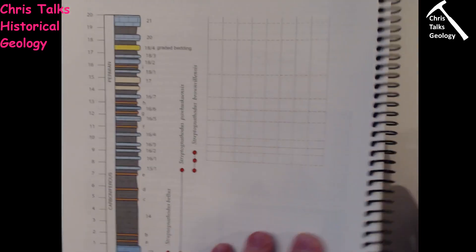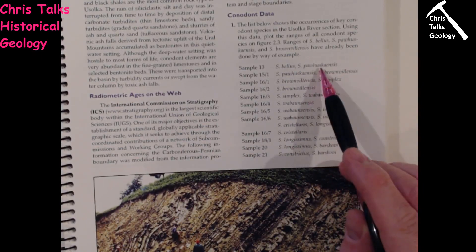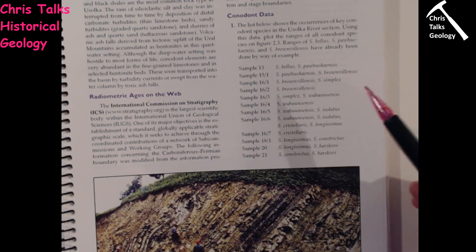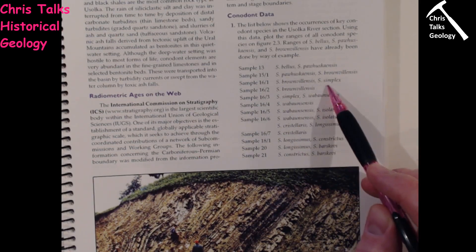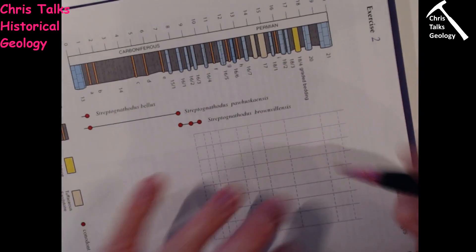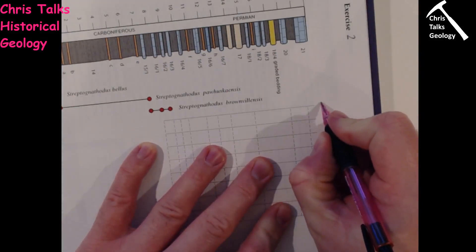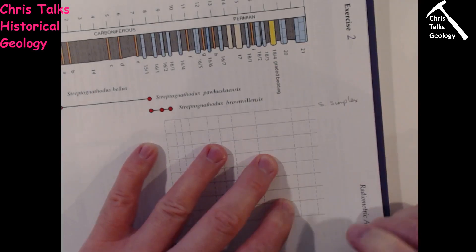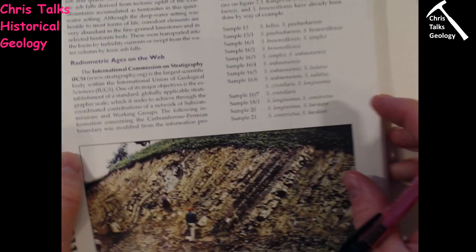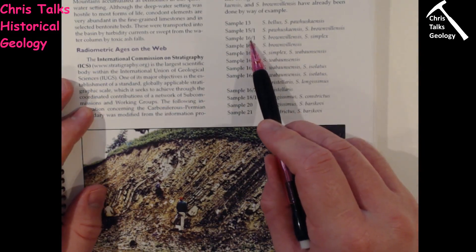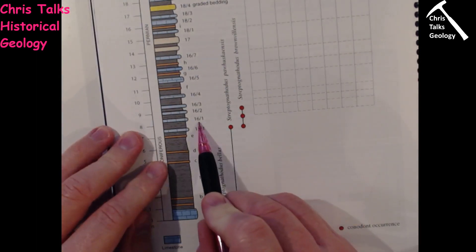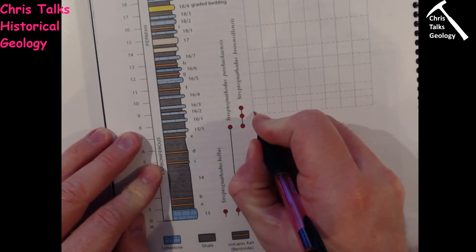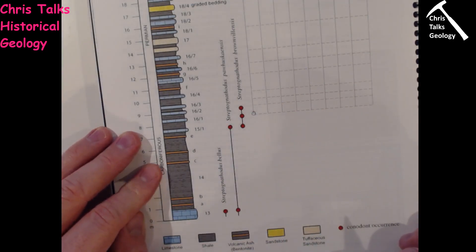So what's the next fossil in our sequence? S. Simplex is going to be the next fossil. I'm going to take my pen out and at the top of the line I'm just going to make a note for S. Simplex. S. Simplex occurs in sample 16-1, so on the diagram I'm going to find sample 16-1, come across, and put a circle on my diagram to show that S. Simplex occurs there.